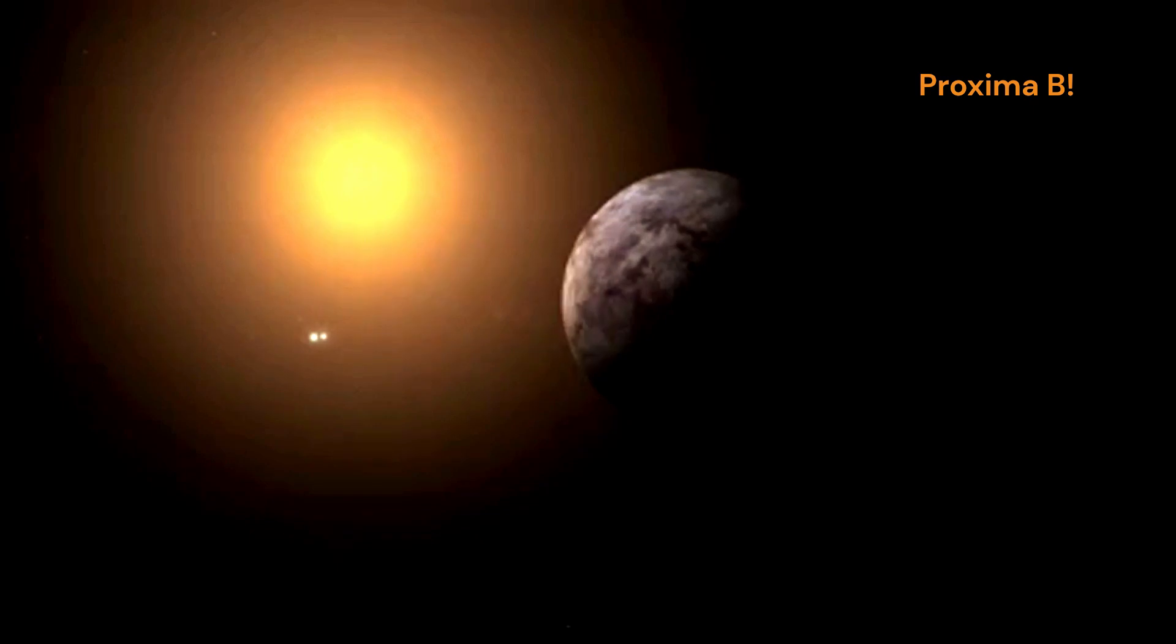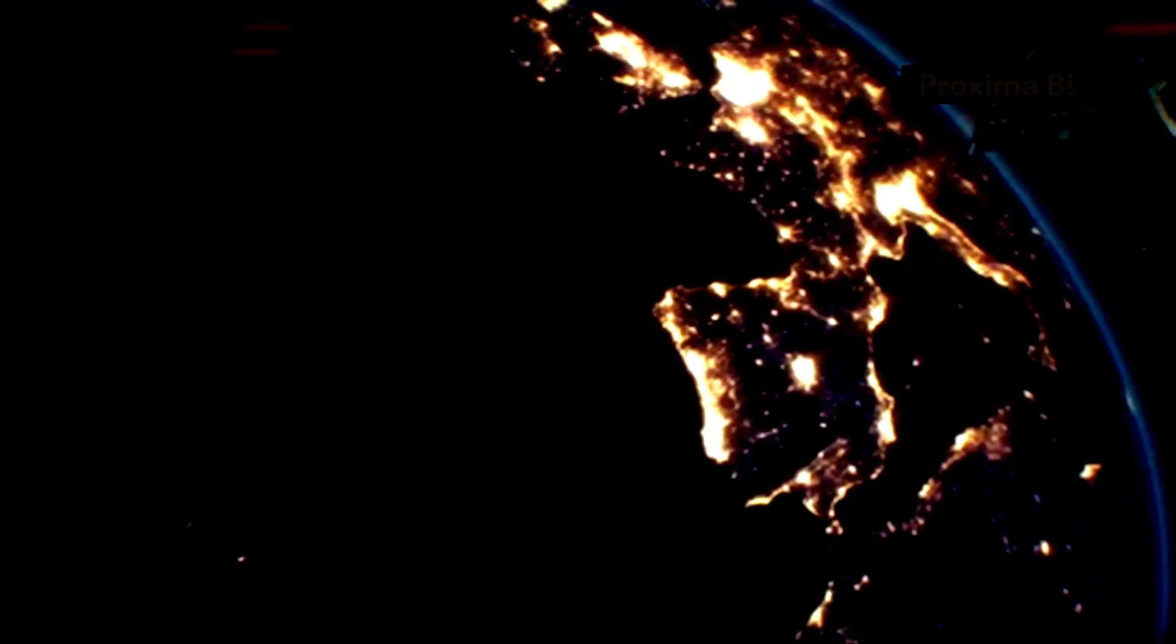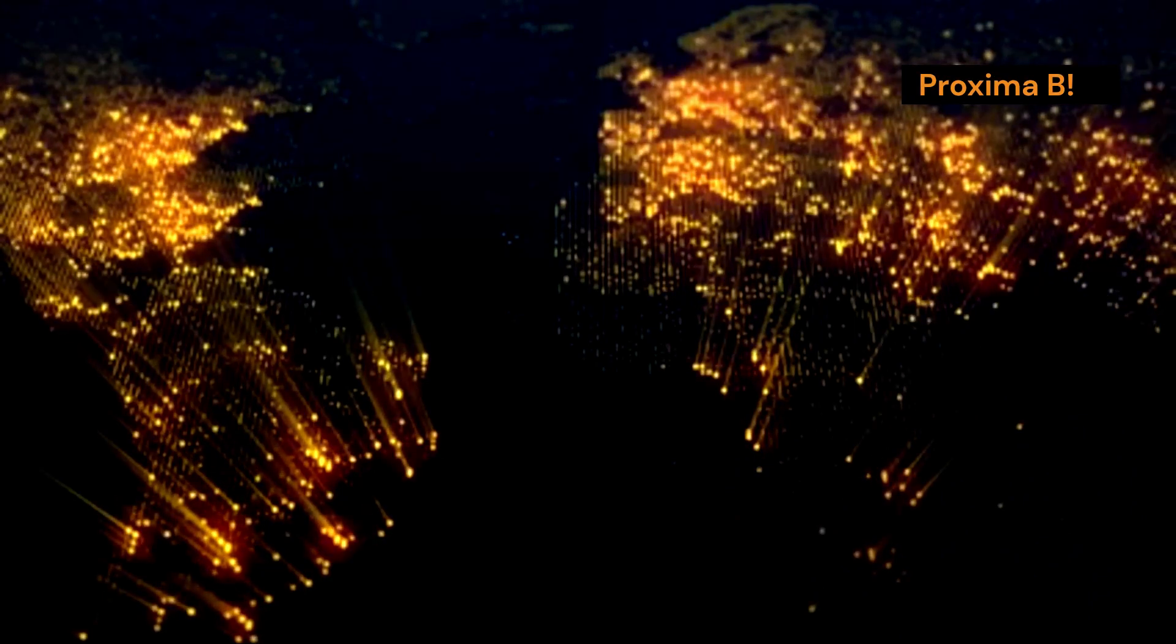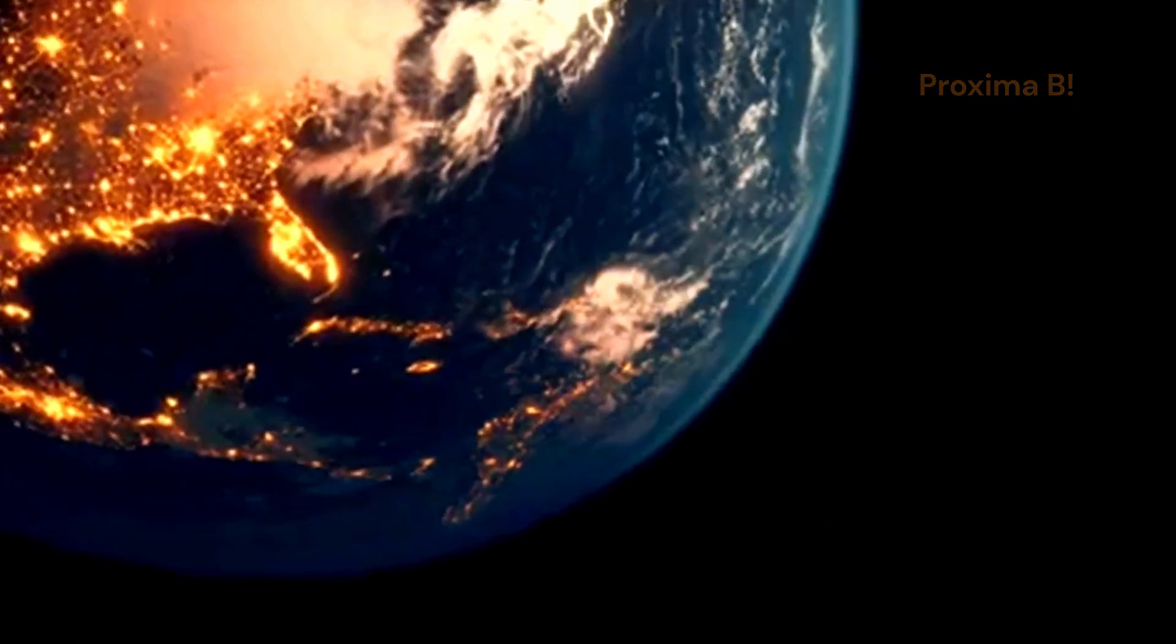Proxima b lies within the habitable zone of its star. This means it could potentially support life. The possibility of detecting artificial light on this planet is breathtaking. It suggests we are not alone in the universe.